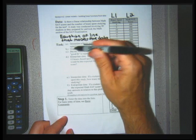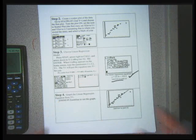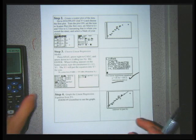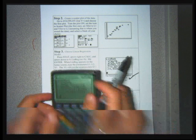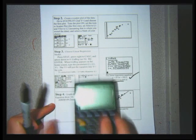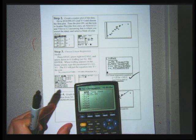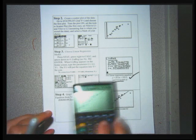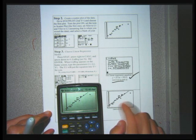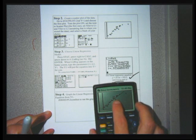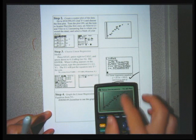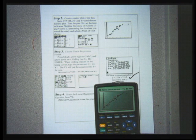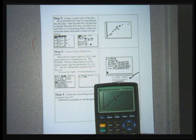To graph the new equation, hit the y equals button, clear anything already there, and type 25.3x + 353.2. Then hit the graph button — no need to reset the viewing window since zoom stat already set a nice one. The resulting line matches the author's graph exactly, showing the data fits the line reasonably well.